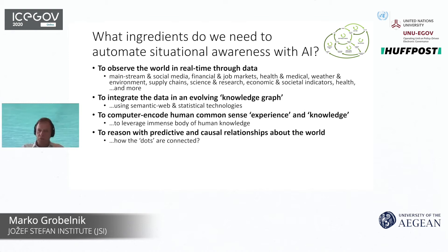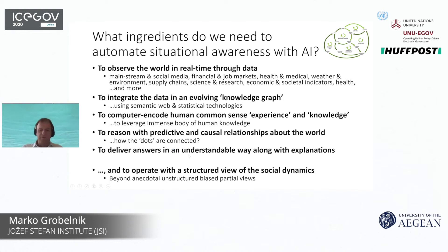Once we have all this, we need not just simple narrow AI, but a little broader AI — like causal reasoning and techniques which are available but not yet popular — to connect the dots. An important issue related to AI these days is delivering explanations in an understandable way, but current modern deep learning techniques are usually not of that kind. We certainly need to look at social dynamics in a structured way.